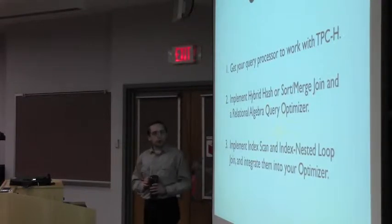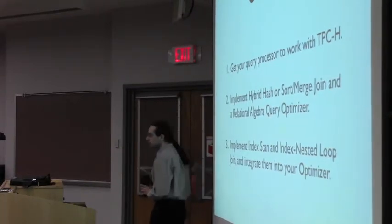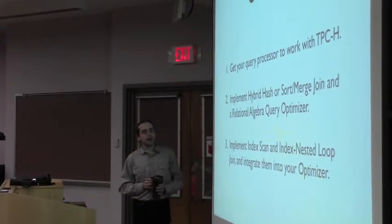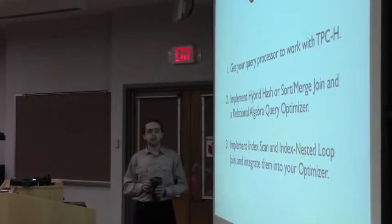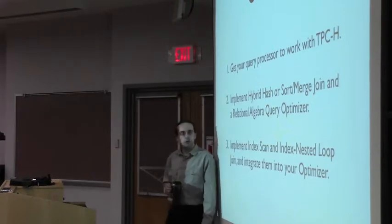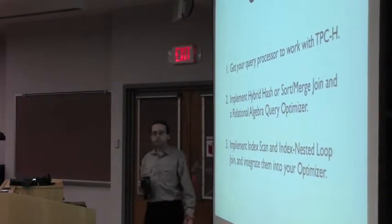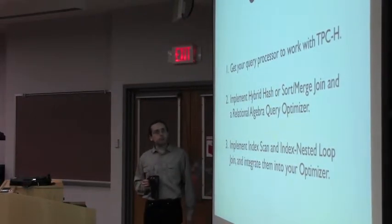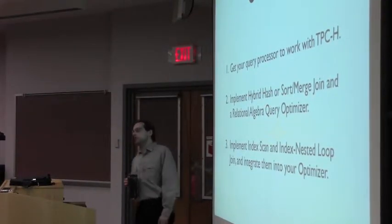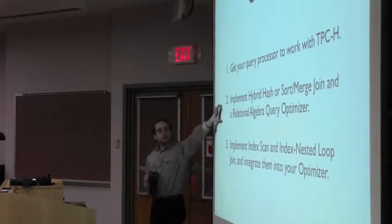The core of this assignment is going to be in two parts. First, you're going to build a very simple relational algebra query optimizer. As part of that, you'll also be asked to implement one of the two more advanced join algorithms — either a hybrid hash join or a sort-merge join. The optimizer will have to figure out when it's appropriate to use those particular join algorithms and implement them properly.